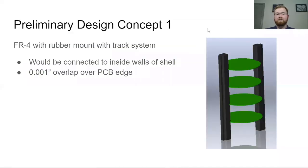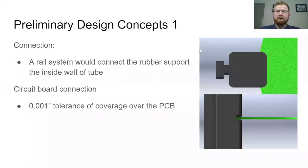So this is our first preliminary design to hold the FR4 PCB. So the idea is that we will have rubber going down the sides of each circuit board covering over just the thousandths of an inch. Given this system has a track system going on, so it has a T that would slide into an inverted T. So this would slide down so it's easy to remove and disassemble if needed to work on the circuit board.